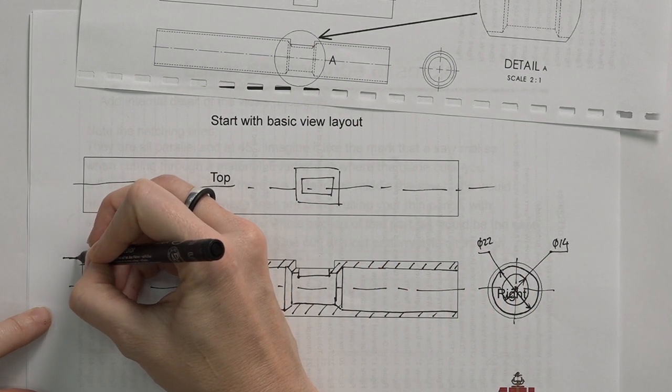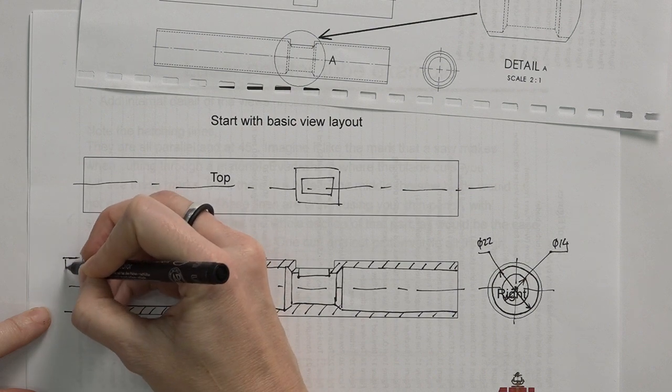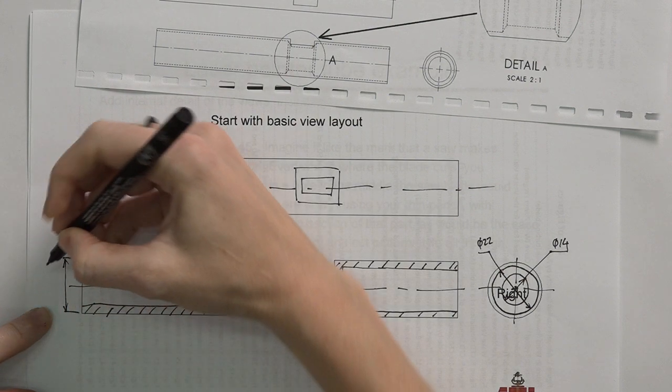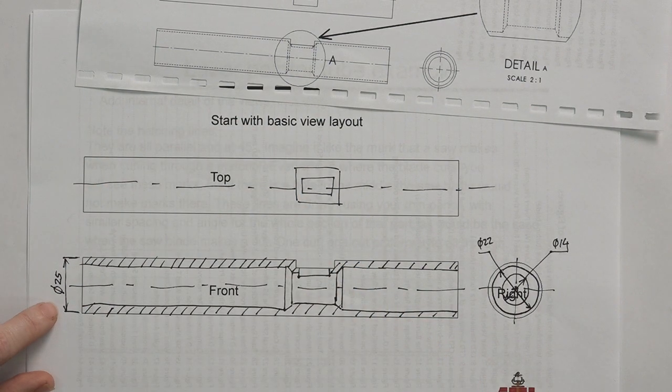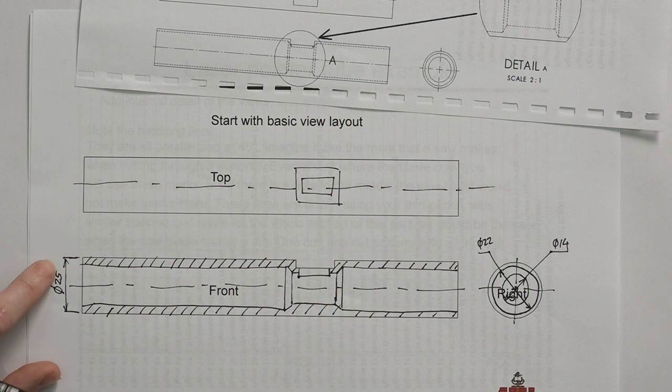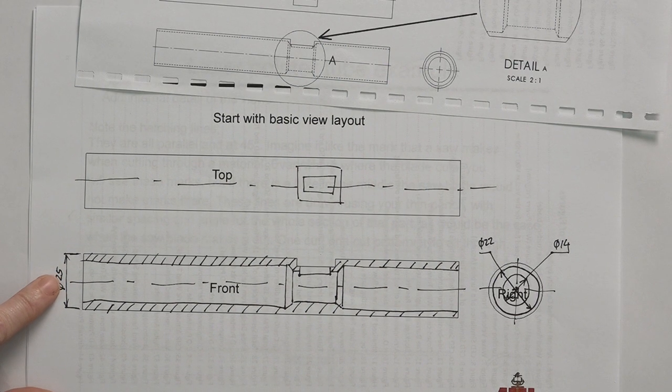We'll have extension lines. We'll have a normal dimension line. But when we indicate the dimension, we indicate that it is a diameter. So we know that this is not just a normal straight piece, but it's actually part of a circular component. Please take note of that dimension. We have not done that before.